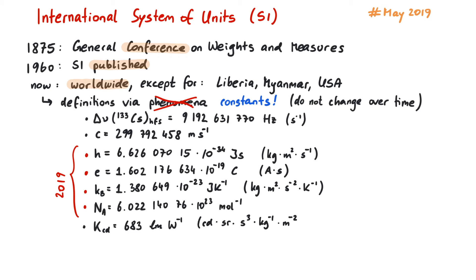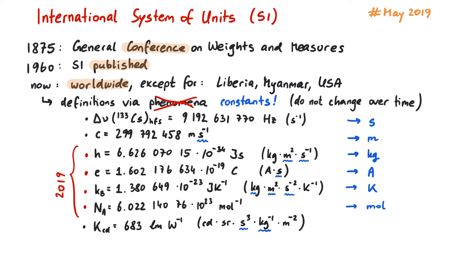Let's check that this is a complete list. The first definition defines the second. If we know what a second is, we can define the meter. With meter and second, we can define the kilogram. The second helps us again to define the amp, and kilogram, meter, and second together define the kelvin. The Avogadro number alone defines the mole, and the last constant defines the candela.